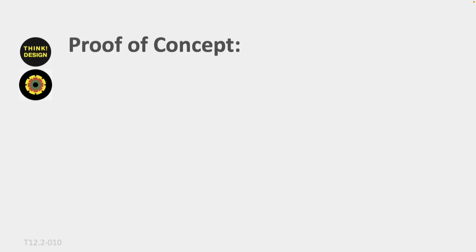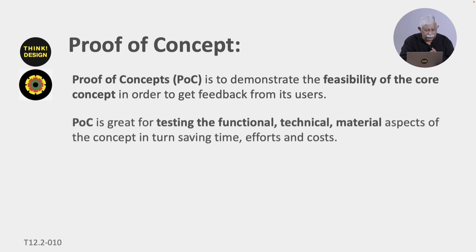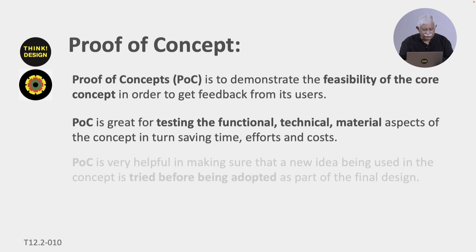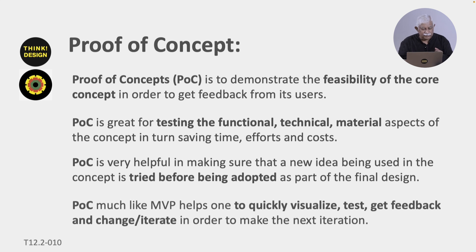Let us move on to proof of concept — POC. As the name suggests, it demonstrates the feasibility of the idea. There is something new that you thought of and you want to test it out before going ahead with it, based on feedback from users. POC is great for testing the functional, technical, or material aspects of a concept. It saves you time, effort, and cost, making sure that a new idea can actually work — trying it out before it is adopted as part of the final design. It helps you quickly visualize, test, get feedback, and iterate to make the next version.